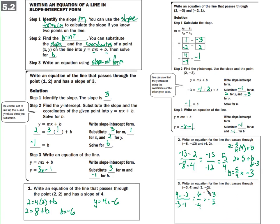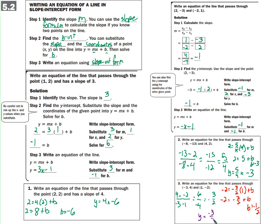Now we'll substitute an x and y — using x = 1 and y = -2. So -2 = (-3/2)(1) + b. We add 3/2 to both sides: -2 + 3/2 gives b = -1/2. So y = (-3/2)x - 1/2.